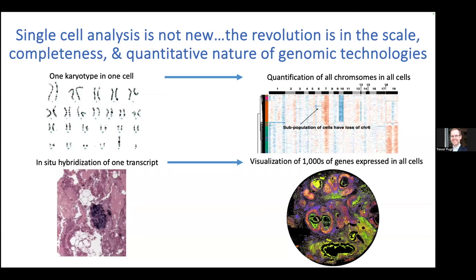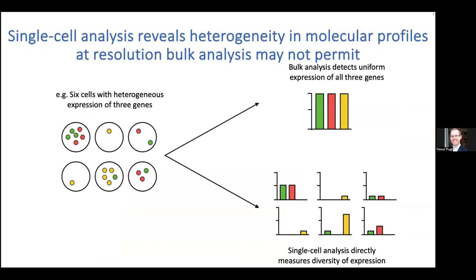Single-cell sequencing is really moving away from averaging across multiple cells. In this toy example, you have six cells all expressing different RNA transcripts. If you ground them all up, you get an average and they all look the same. But if you actually had the ability to dissociate and look at single cells, you can see some of those transcriptional dynamics within each cell by themselves.